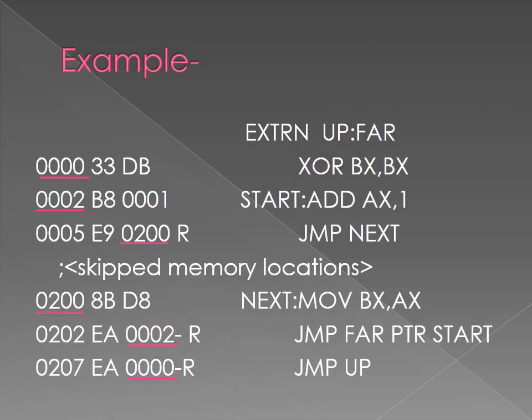Let's take an example. The far jump instruction sometimes appears with the far pointer directive. Another way to obtain a far jump is to define a label as a far label. A label is far only if it is external to the current code segment or procedure. The jump instruction in the example references a far label, which is defined as a far label via the EXTRN output:FAR directive. External labels appear in programs that contain more than one program file. In the given example, you can see memory locations and relocatable programs.